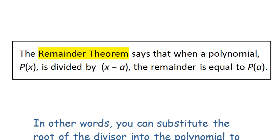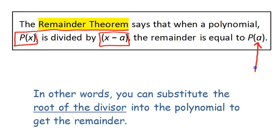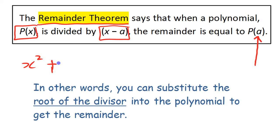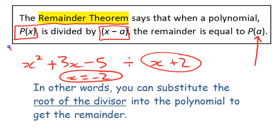Let's put it in more general terms. The Remainder Theorem says that when you have some polynomial p(x) and you're dividing by some binomial x minus a, you can get the remainder by substituting a into the polynomial. For example, if you had x squared plus 3x minus 5 divided by x plus 2, instead of doing long division, you can just substitute in x equals negative 2 into that polynomial and you'll get the remainder.